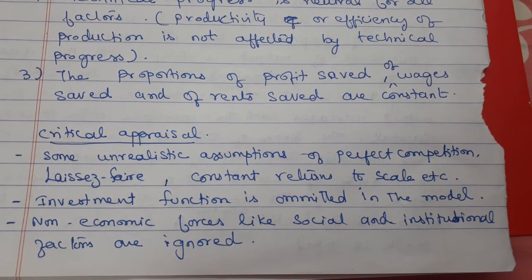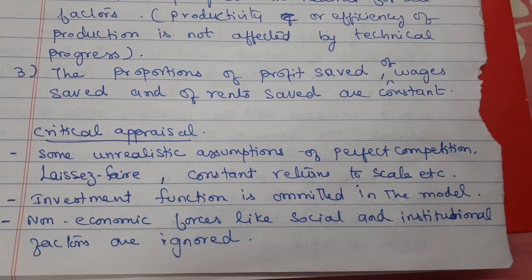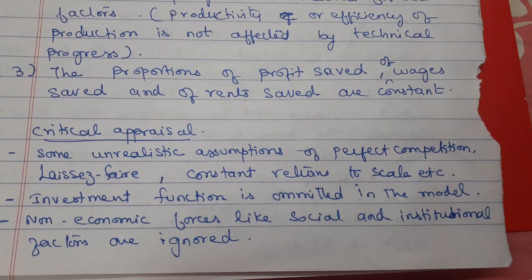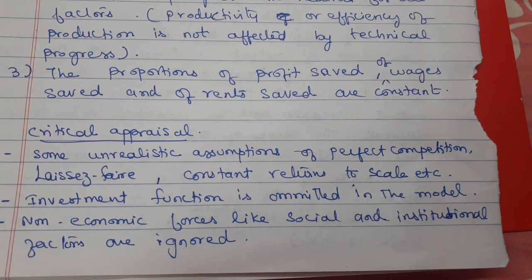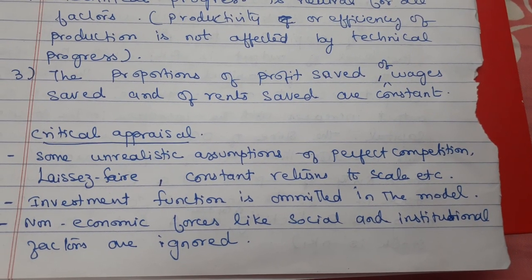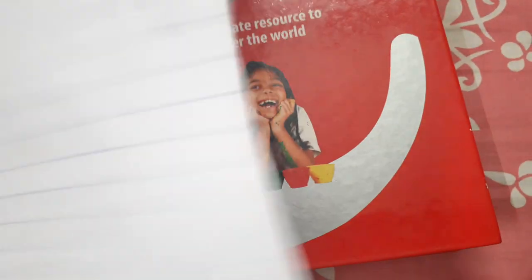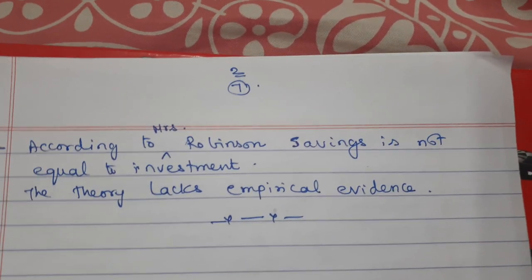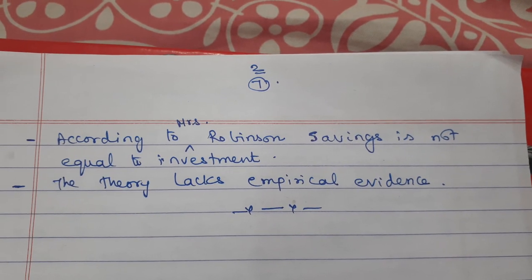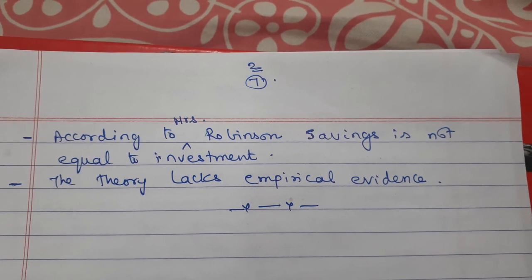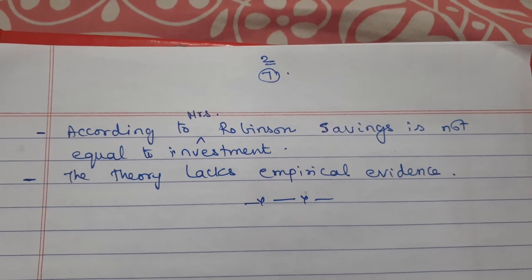Critical appraisal: Some unrealistic assumptions like perfect competition, laissez-faire, and constant returns to scale are indicated which are unrealistic in nature. The investment function is omitted in the model. Non-economic forces like social and institutional factors are ignored. According to Mrs. Joan Robinson, savings is not equal to investment. Lastly, the theory lacks empirical evidence and has no practical validity. If you have any doubts, get back to me on WhatsApp. Thank you.